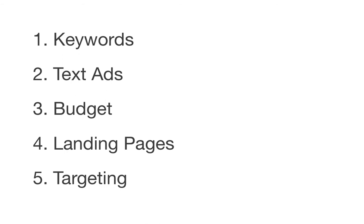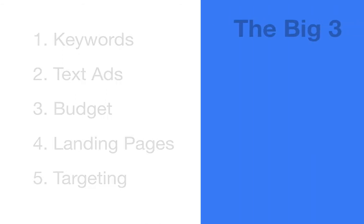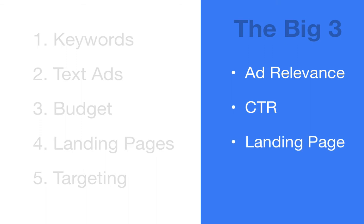All of those play into your quality score. There are other components called the big three: ad relevance — how relevant the ad is to the keywords being searched — the CTR (click through rate), which is how many times someone clicks on your ad compared to the number of impressions or views it gets on a search results page, and the landing page experience. Our sites are highly optimized, so landing page experience is pretty good, especially if you set up the website as recommended — they are all very familiar with how the sites are best set up.